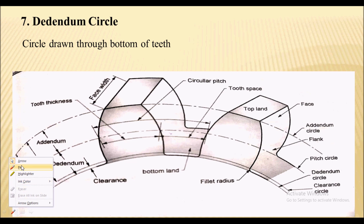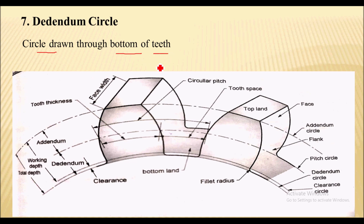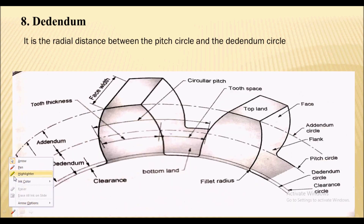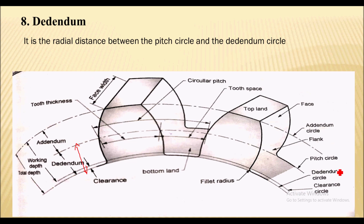Next is the dedendum circle. It is the circle drawn to the bottom of the teeth, and this circle is concentric with the pitch circle. The dedendum is the radial distance between the pitch circle and the dedendum circle. This dedendum circle is also called the root circle.